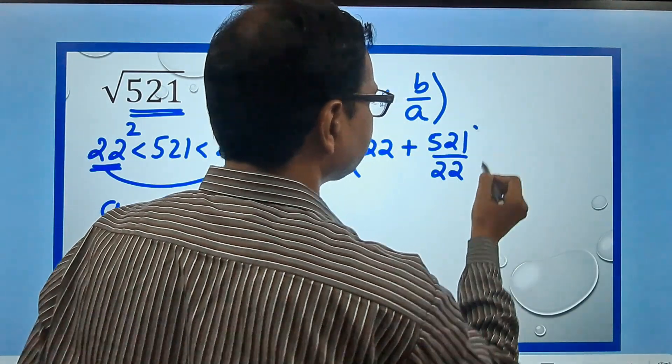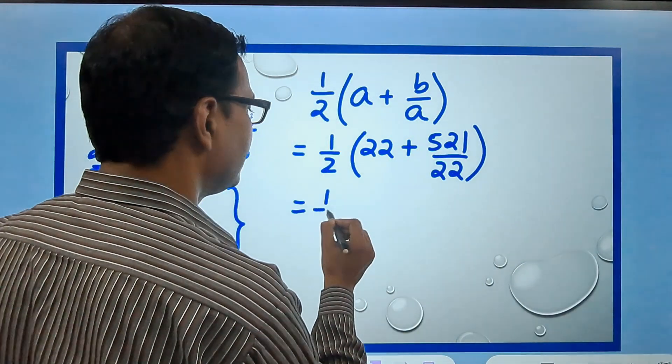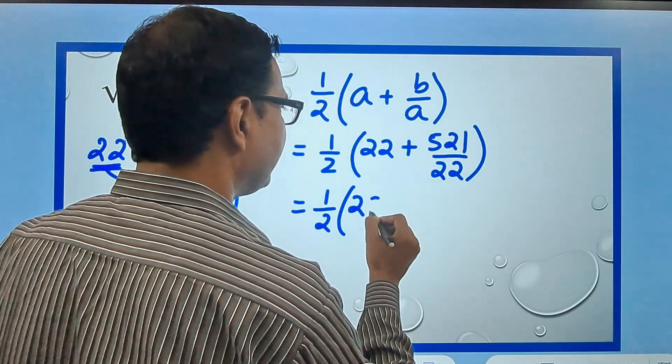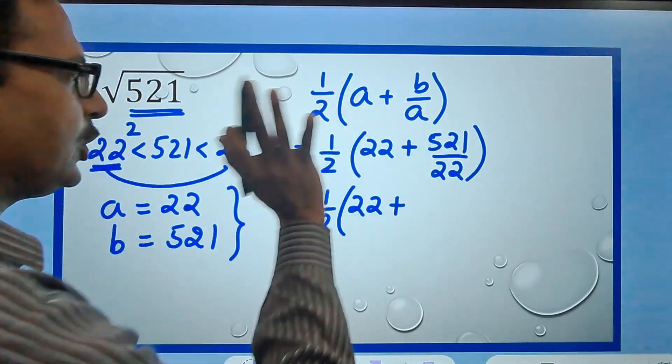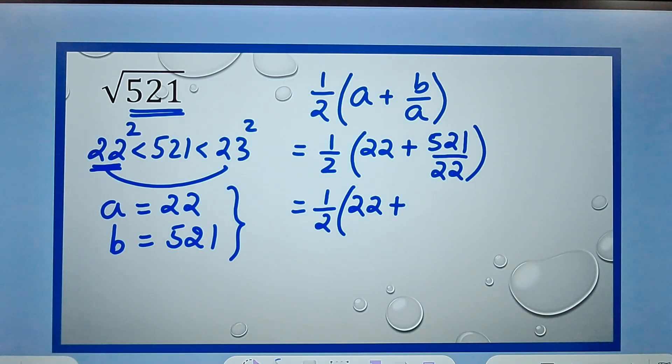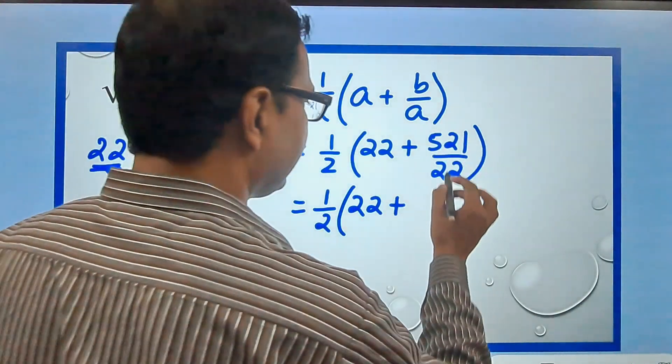What we need to do here is divide 521 by 22. Now that is the calculation which will be an extra calculation in this. Apart from that there is no other calculation which will come in this particular trick of finding the square roots of imperfect square numbers. I have done it already for you, this is 23.68 approximately.